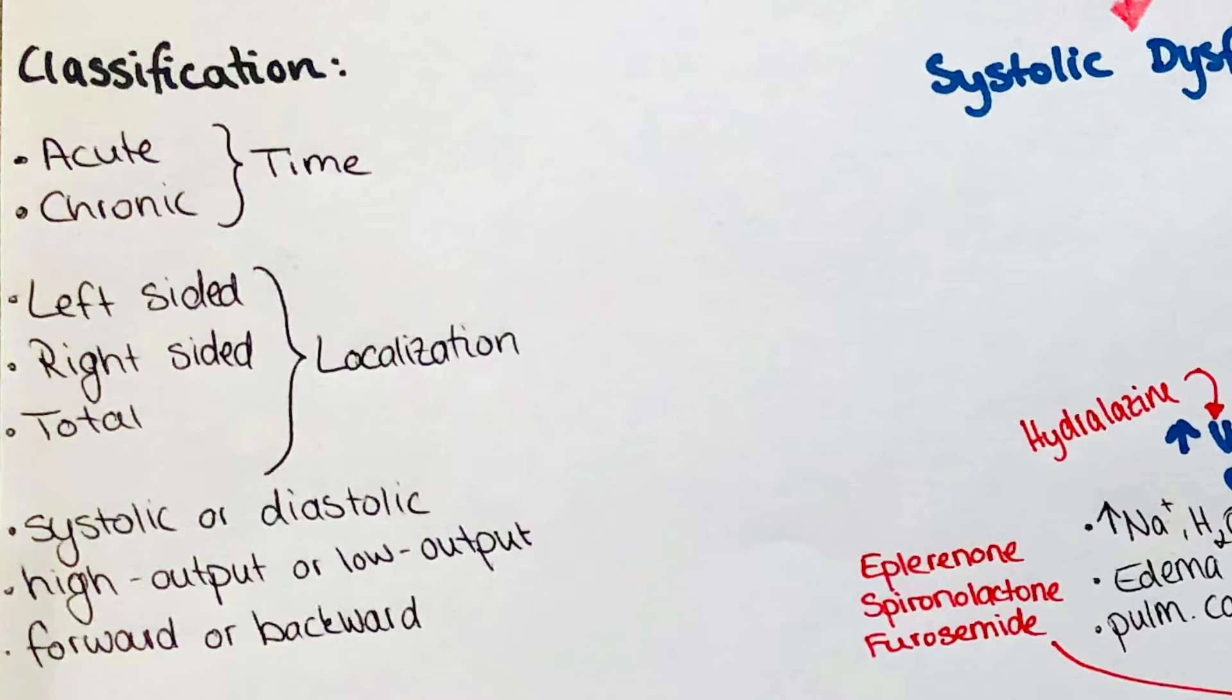Also the amount of blood that is being pumped is essential for differentiation of the type of heart failure. Here we usually distinguish either low output or high output heart failure. The last type of classification I want to mention is the differentiation into forward or backward heart failure depending on the cause of strain that is put on the heart so whether it originated in the lungs or the body.